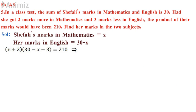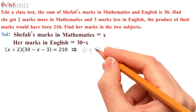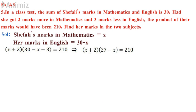So when I go for simplifying I will get x plus 2 into 27 minus x is equal to 210. And further simplifying I will get minus x squared plus 25x plus 54 is equal to 210. Therefore you will be getting x squared minus 25x plus 156 is equal to 0.